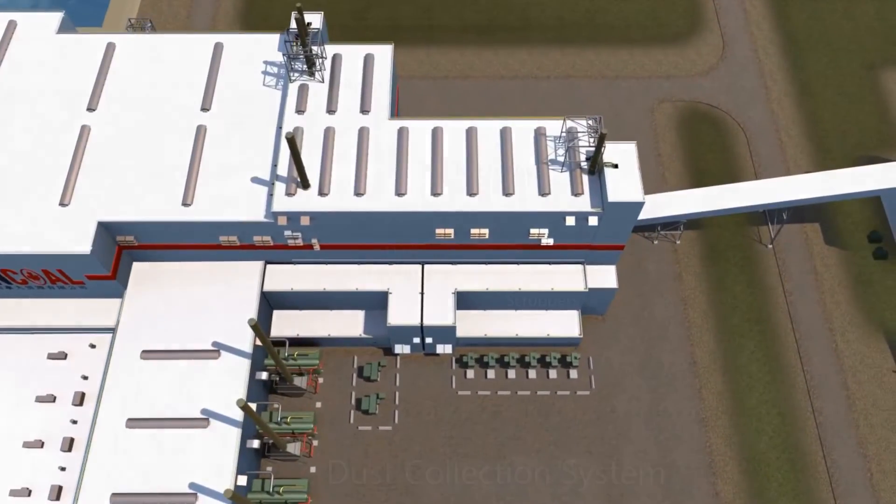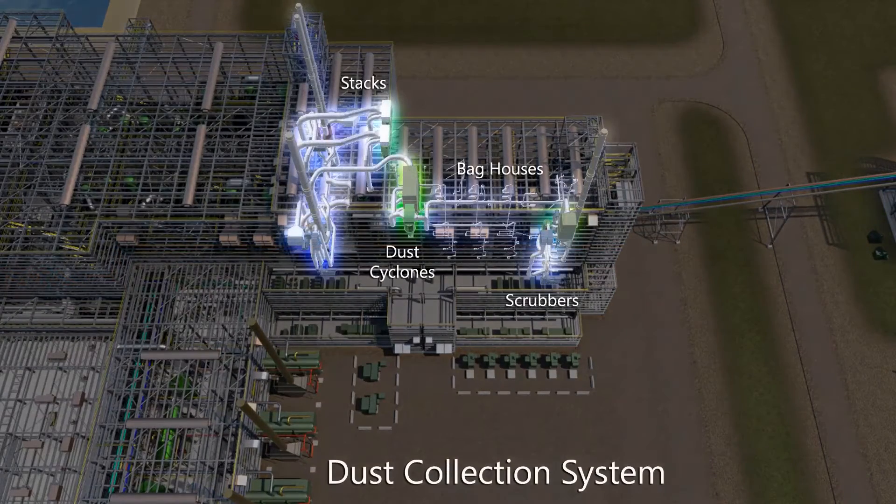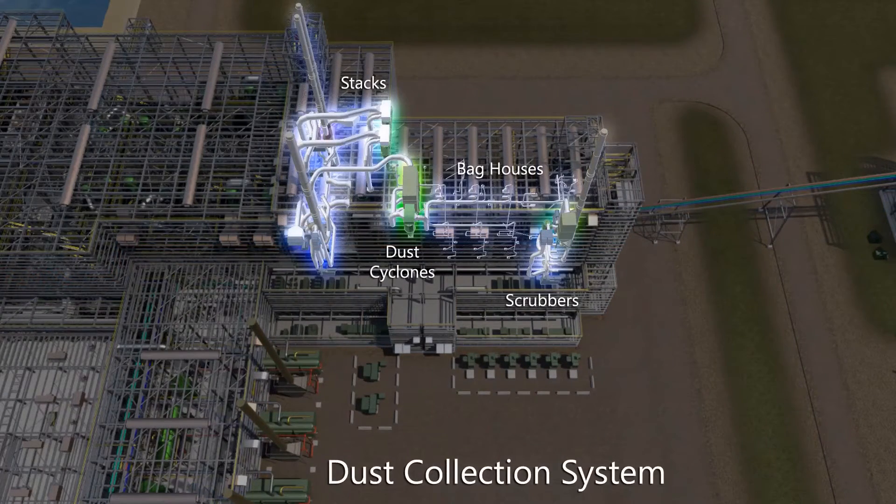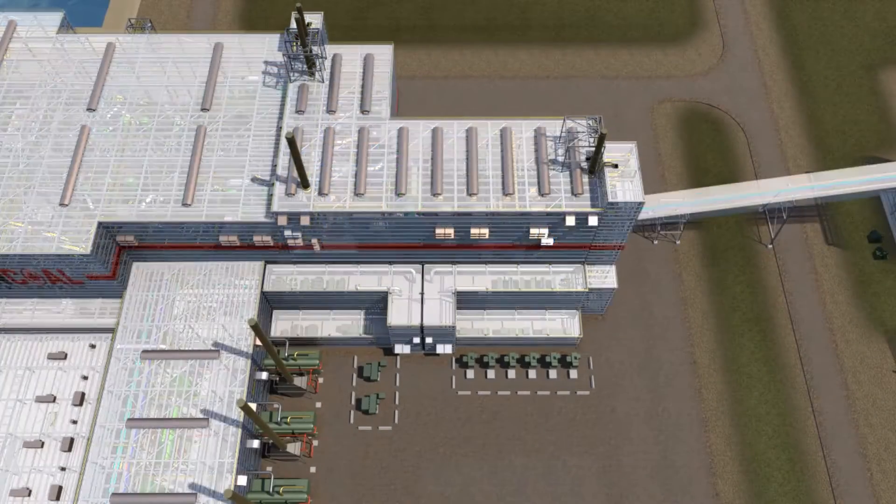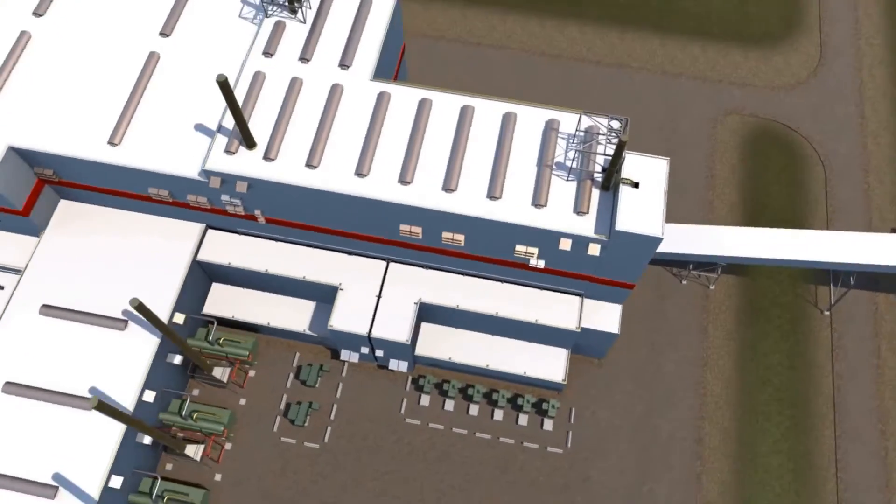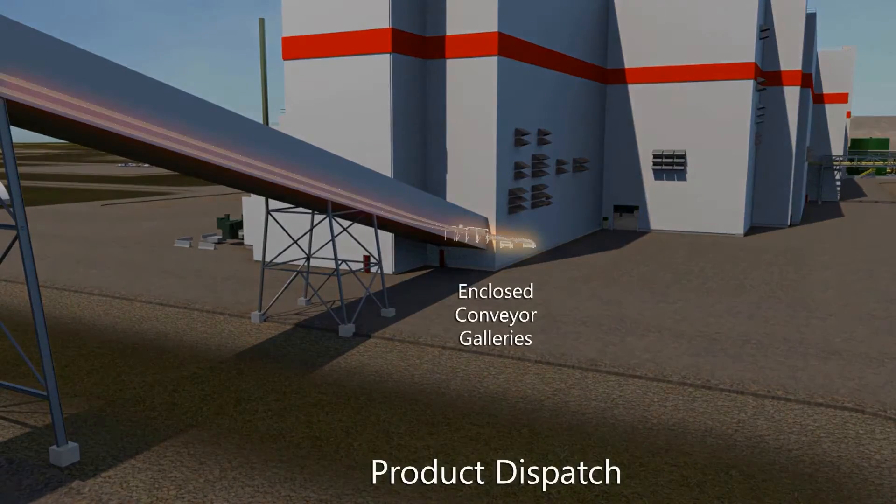Dust from the process is recovered and the air is treated in bag houses before being released through the stacks. Air from the dryers is treated in dust cyclones and wet scrubbers before being released through the stacks. Emissions are tested annually to ensure compliance with regulations. Conveyors between the buildings are enclosed in galleries to ensure no dust is released.